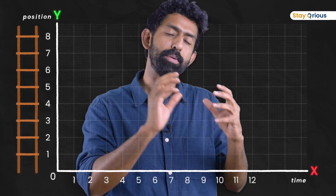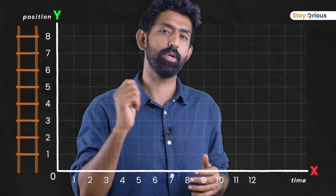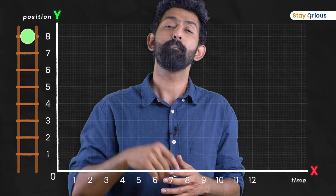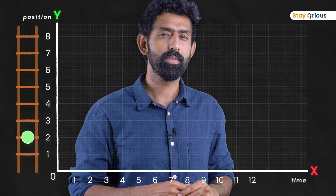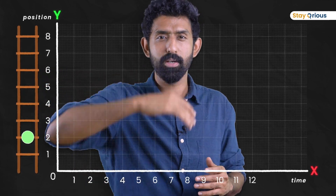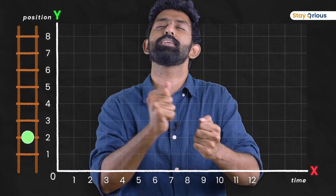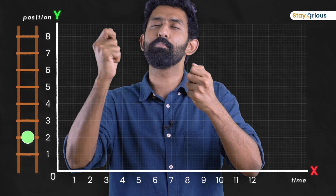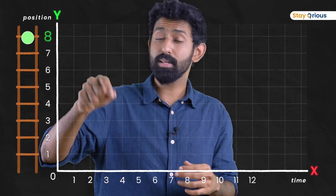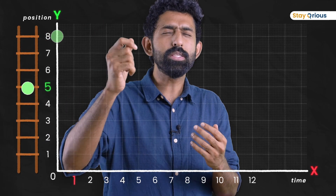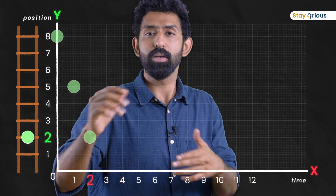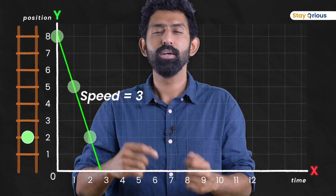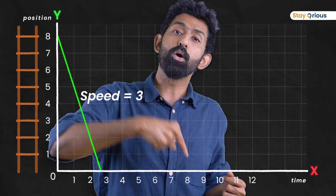Now stop and think about this. Instead of two steps every second, what if I was doing three steps every second — three meters per second — but starting there and going down? What will the graph look like? All you have to do is imagine taking pictures and pasting them. I start there and jump: after one second I'm three meters below, after another second I'm three more meters below. Keep doing that, join the dots. What do you see? Steeper, but in the downward direction.